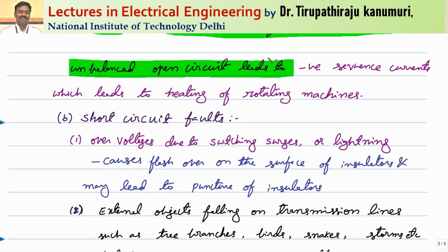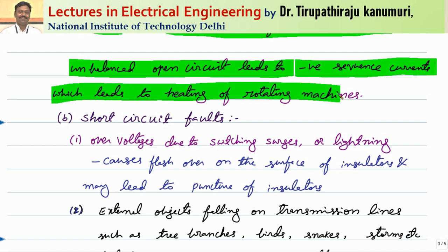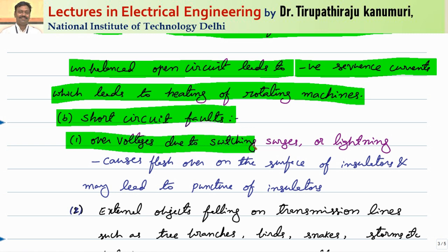Line to line, line to ground, or double line to ground faults result in different currents in different phases, leading to the same type of damaging effects in machines. Unbalanced open circuit leads to negative sequence currents, which leads to heating of rotating machines. Short circuit faults can be caused by over-voltages due to switching surges or lightning — as already discussed in traveling waves.